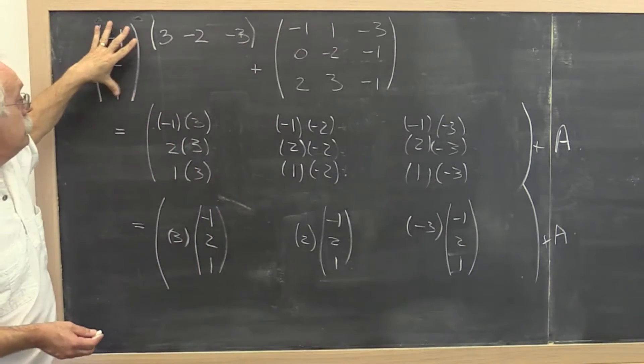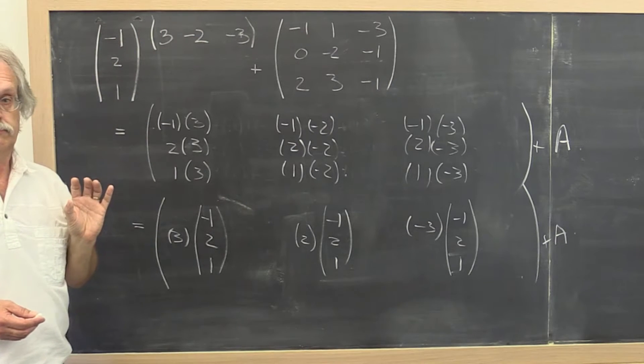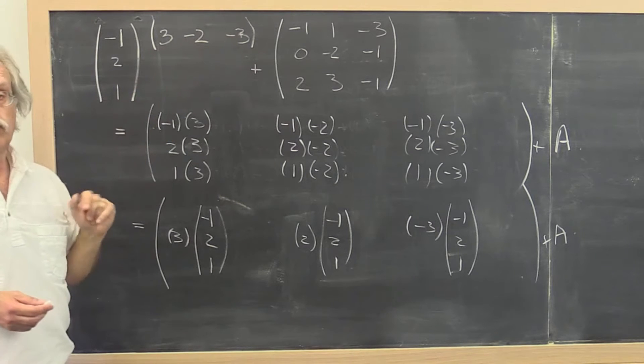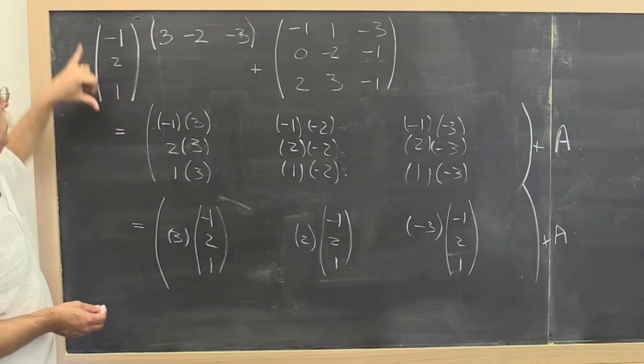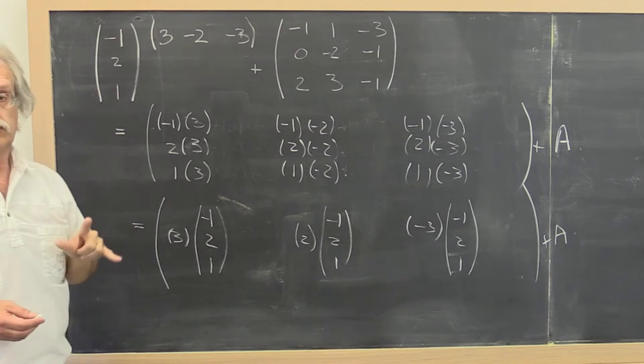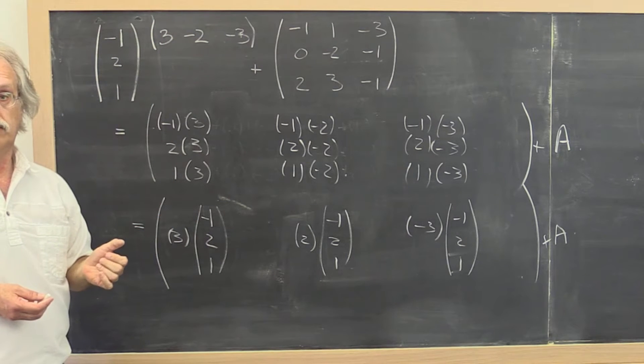Now for the moment let's just concentrate on this right here. What is this? This is also known as an outer product. It's also a 3 by 1 matrix times a 1 by 3 matrix. So the result should be a 3 by 3 matrix.